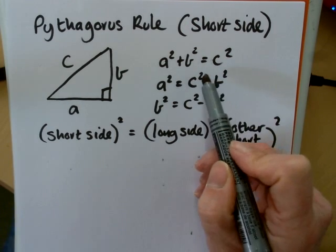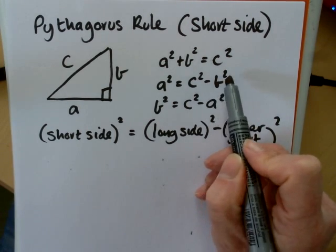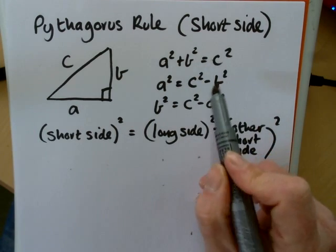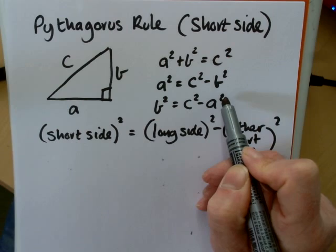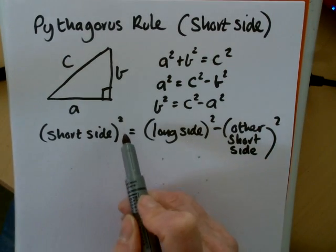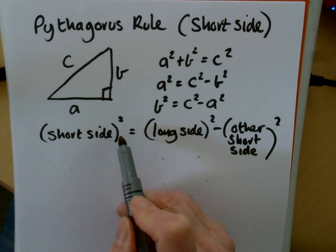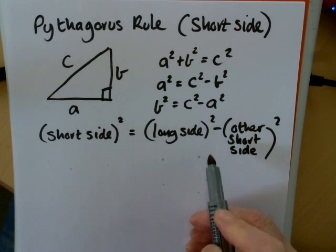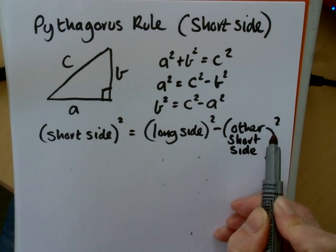So a squared would equal c squared minus b squared. And in the same way, had we moved the a squared over, that would have taken a negative value on the other side. So basically, if we're trying to find a short side, we know the rule is that the short side squared will equal the long side squared minus the other short side squared.